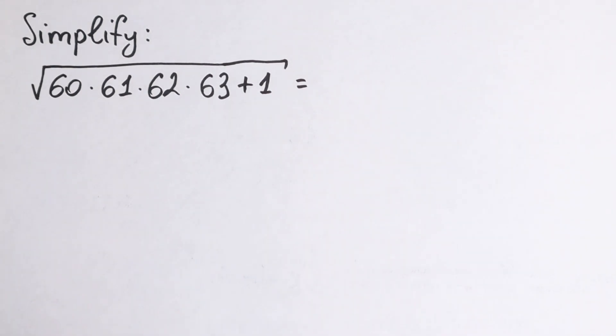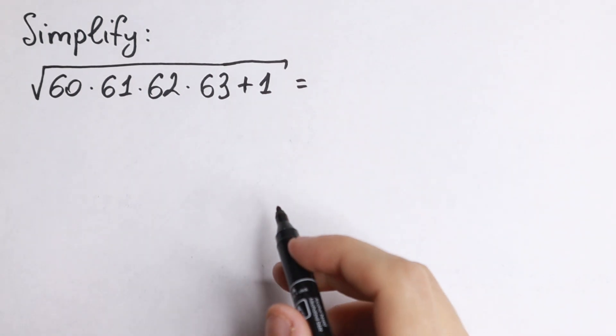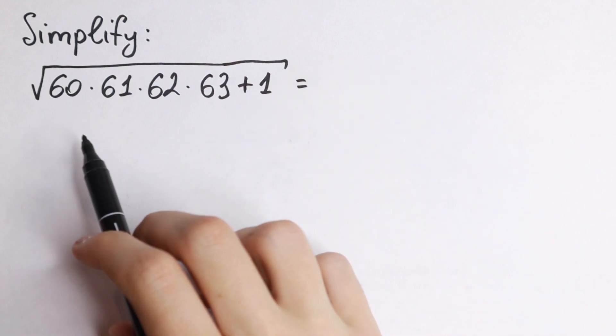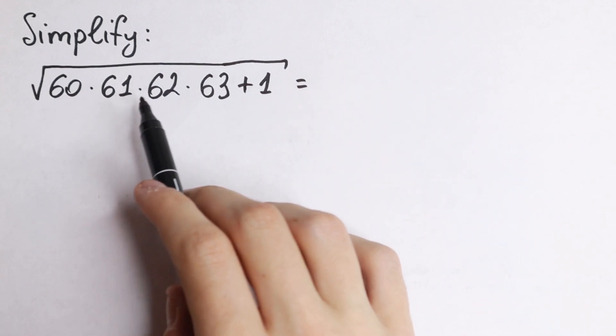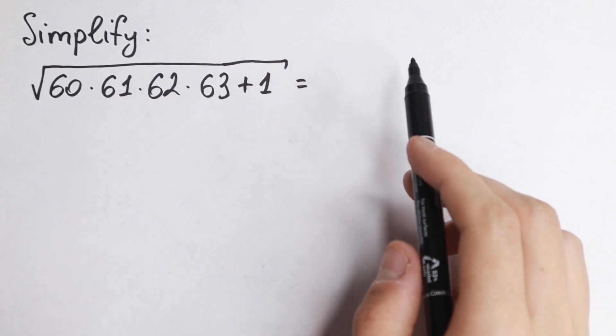Hello everyone! Welcome back to MathMode. Really interesting algebra problem today. We need to simplify this expression. We have a long product: 60 times 61, 62, 63 and plus 1 in the end.